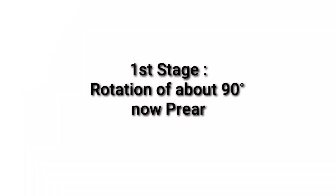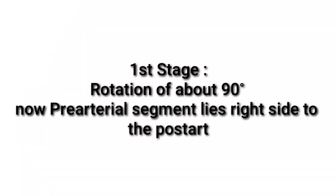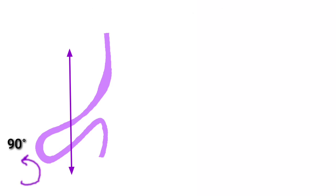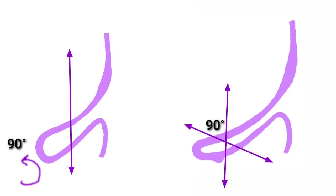There are three stages of rotation. In the first stage, there is rotation of about 90 degrees. The pre-arterial segment lies to the right side of the post-arterial segment. Previously, the midgut was in the sagittal plane. Now it will undergo a 90-degree rotation in the anti-clockwise direction, so it will now lie in the horizontal plane.